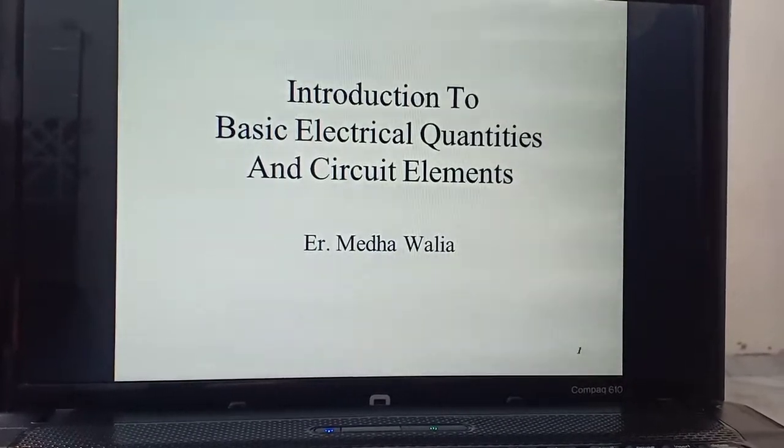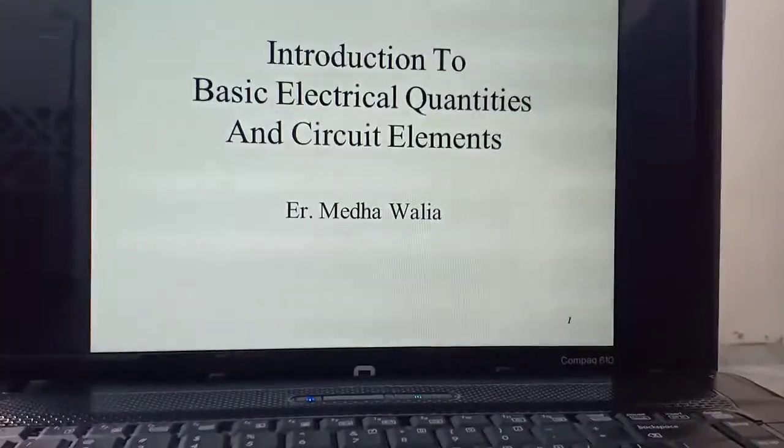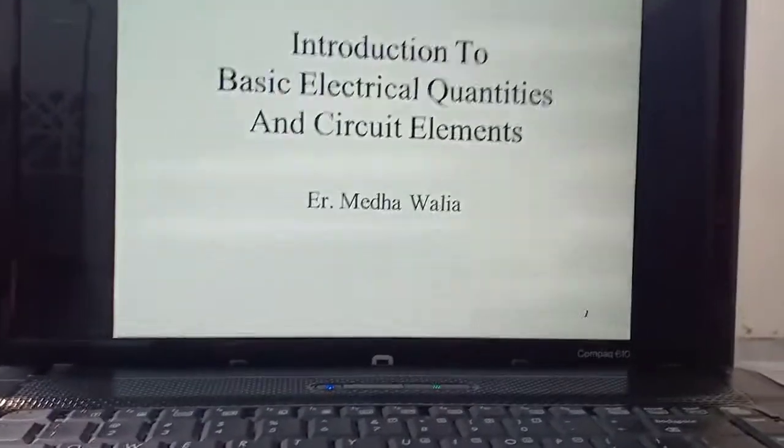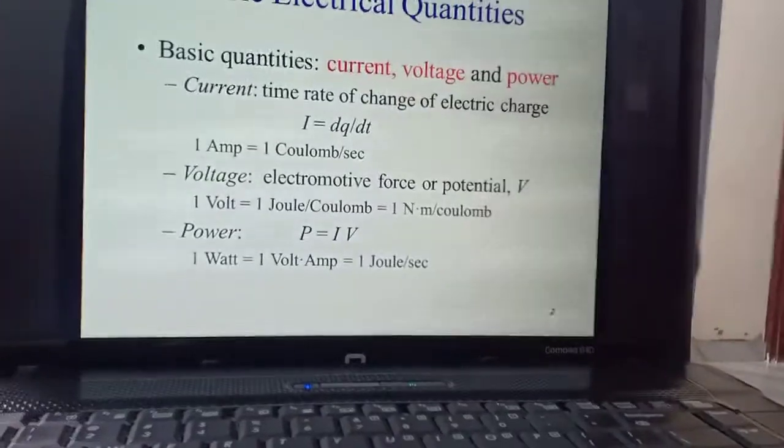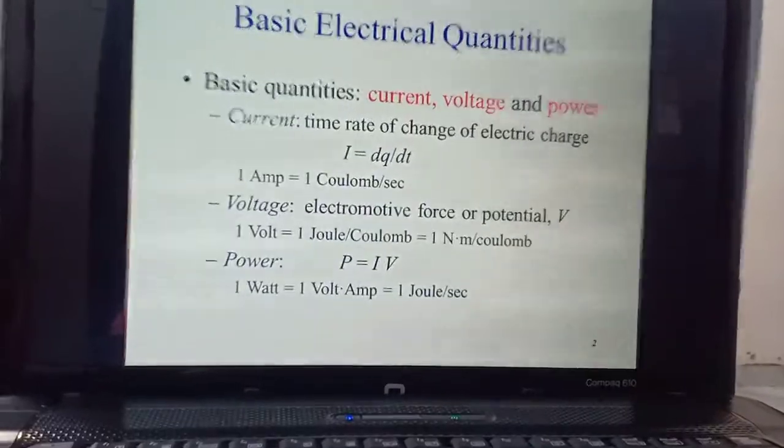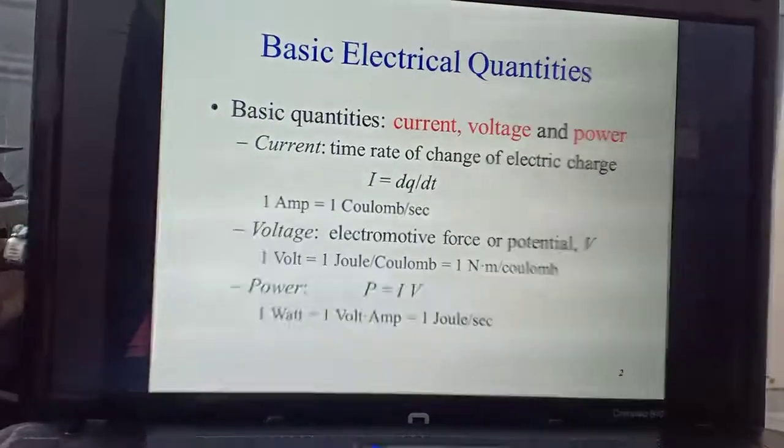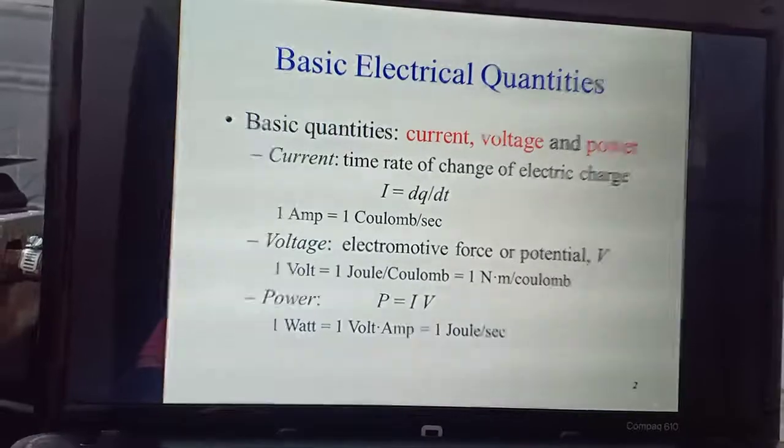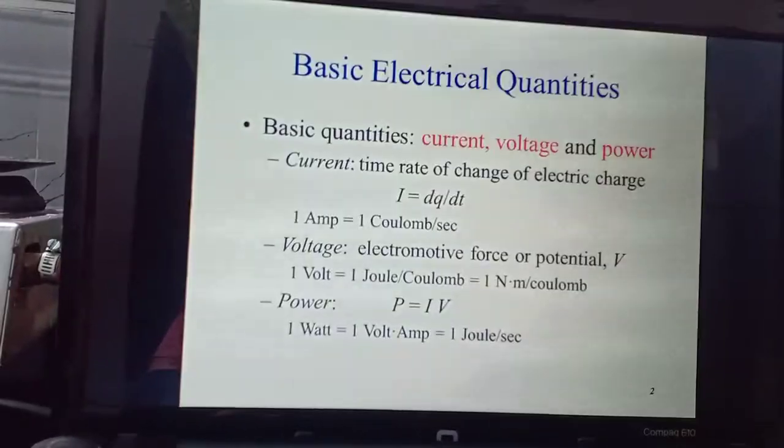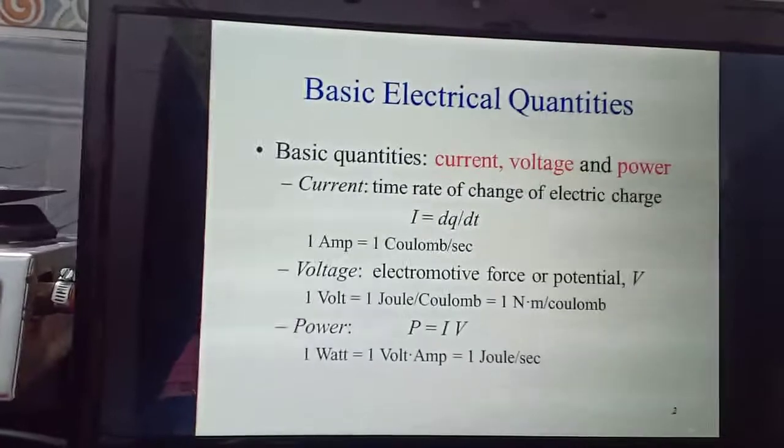So this lecture is prepared by Medha Walia. Let's start off with basic electrical quantities. As we are already aware of the charge, we say a proton has a positive charge and an electron has a negative charge. Charge is measured in units called coulombs, abbreviated by C.